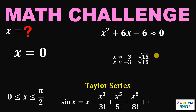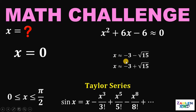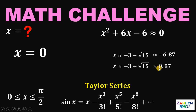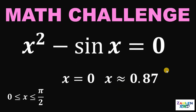We have two possible values for x: x is approximately equal to negative 3 minus square root of 15, which is approximately negative 6.87, or x is approximately equal to negative 3 plus square root of 15, which is approximately 0.87. Since x is between 0 and pi over 2, the valid solutions are x equal to 0 and x approximately equal to 0.87. And as always, we are done.